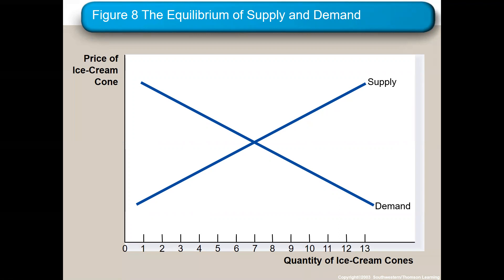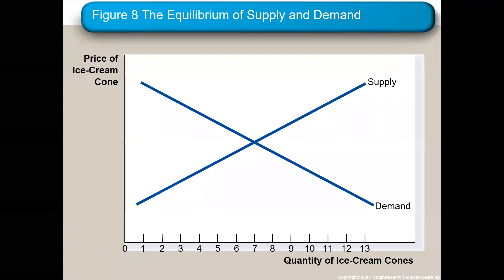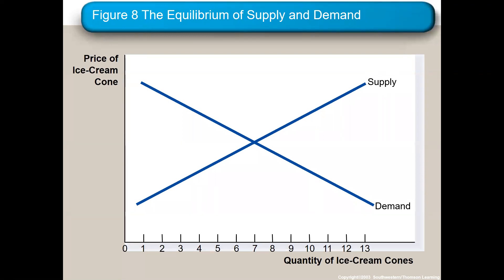Substitutes are two goods where if the price of one good goes up, the demand of the other goes up. They're directly related. The exam questions will be like: good X price goes up and the quantity of good Y goes up — what type of good is it? It's a substitute because they're both going in the same direction.